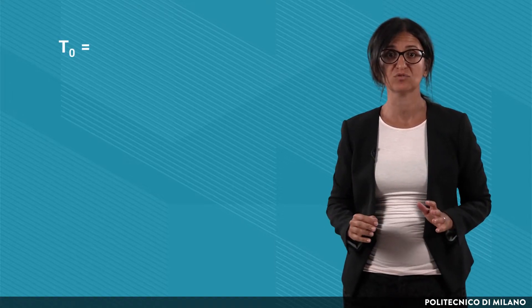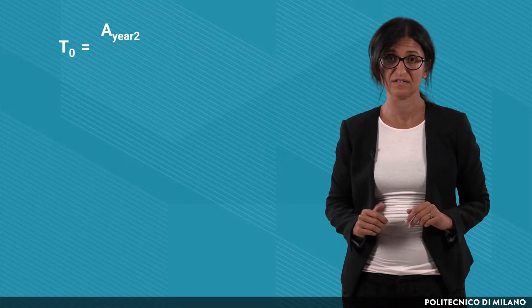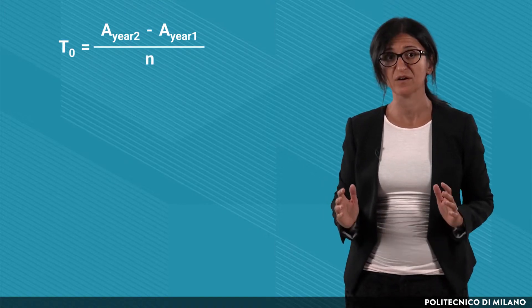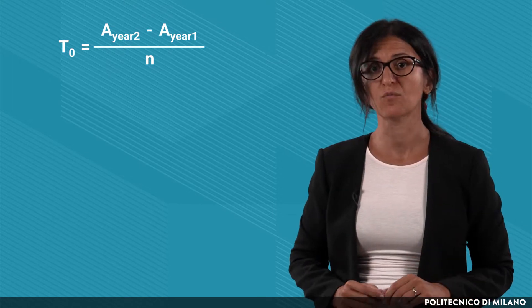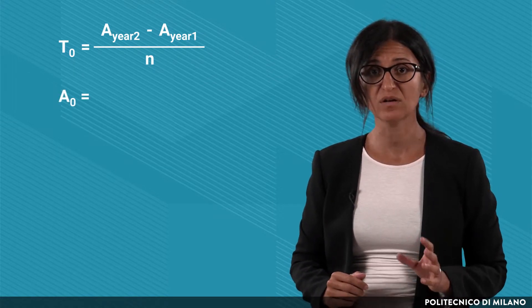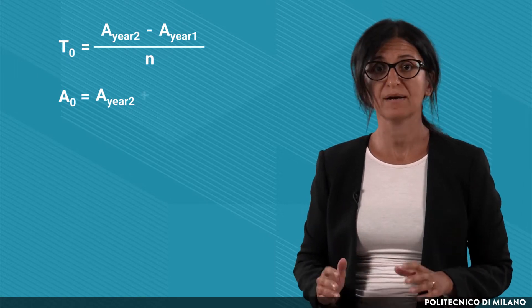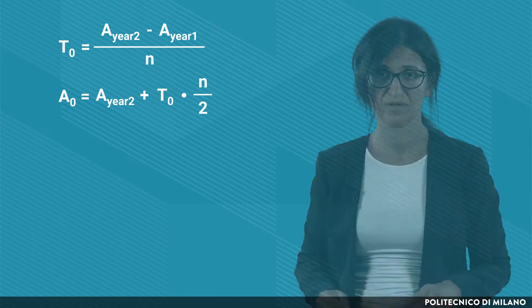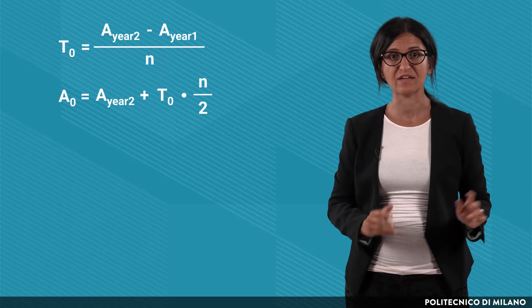Let's start with the first application of the model, the so-called initialization. If we have the time series of the last two years, we can use these simplified formulas. The trend is equal to the average demand in the second year (the more recent one) minus the average demand in the first year, all divided by the number of periods per year, n. Then we can compute the initial value of the average component. A0 is equal to the average demand in the more recent year (year 2), plus the trend multiplied by the number of periods in one year, divided by 2.